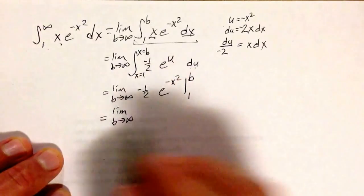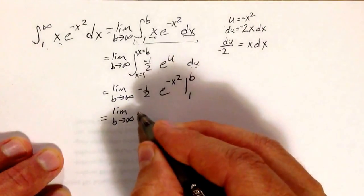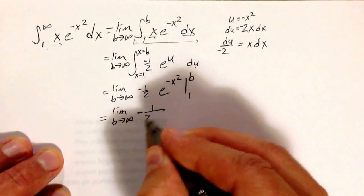Implementing my limit is the absolute last thing that I do. First, I'm going to implement that right there: negative 1 half.